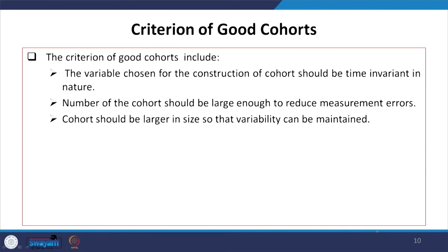The criteria for good cohorts include: the variable chosen for construction of the cohort should be time-invariant in nature; the number of cohorts should be large enough to reduce measurement errors; and the cohort should be larger in size so that variability can be maintained in the data.